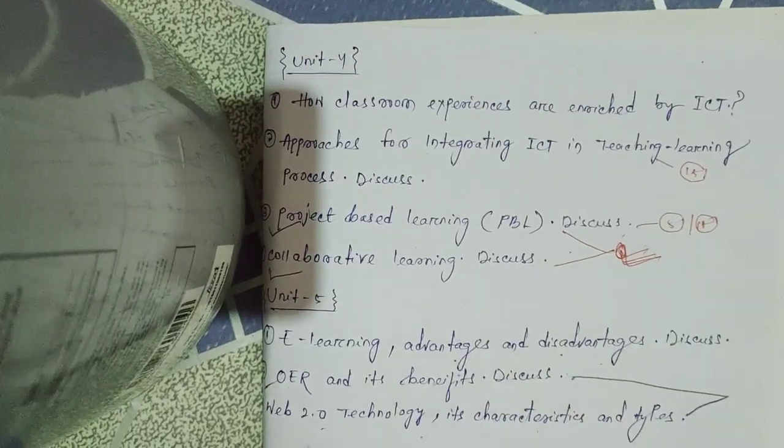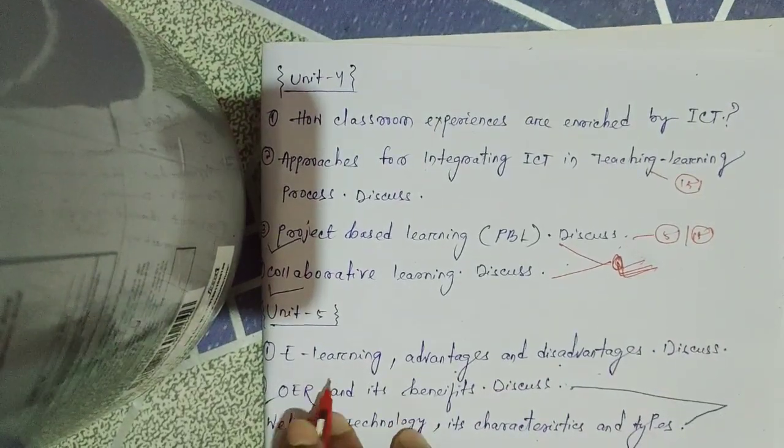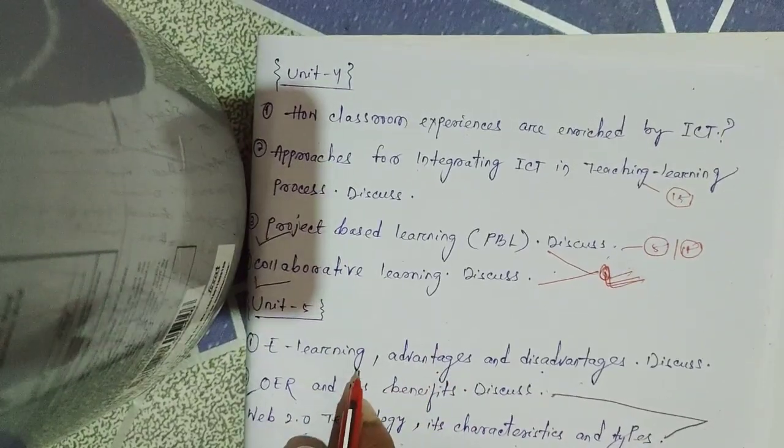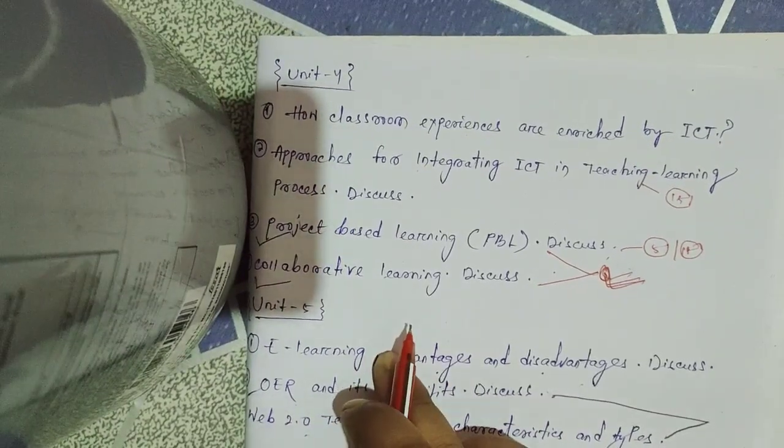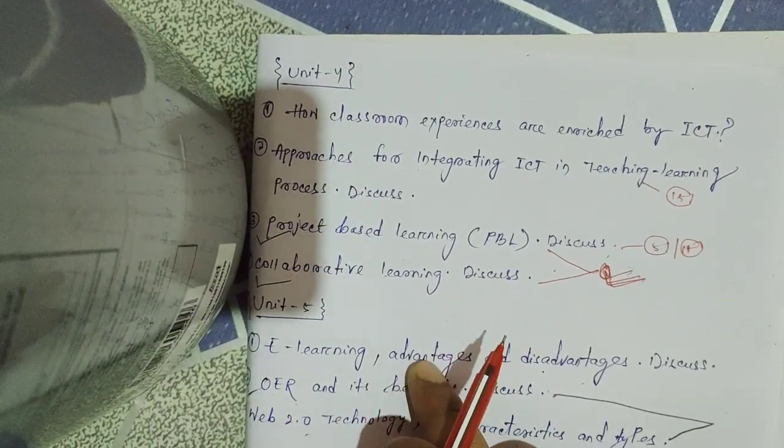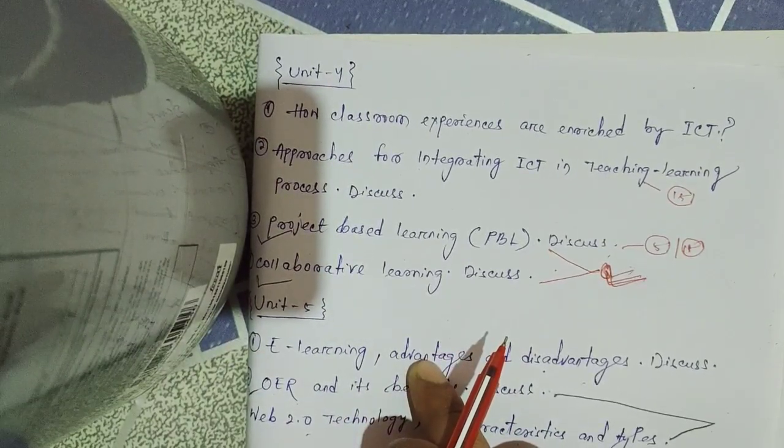Last, finally Unit 5: E-learning advantages and disadvantages. Unit 3-5 have questions as short notes with high chances. Long questions depend on the examiner.